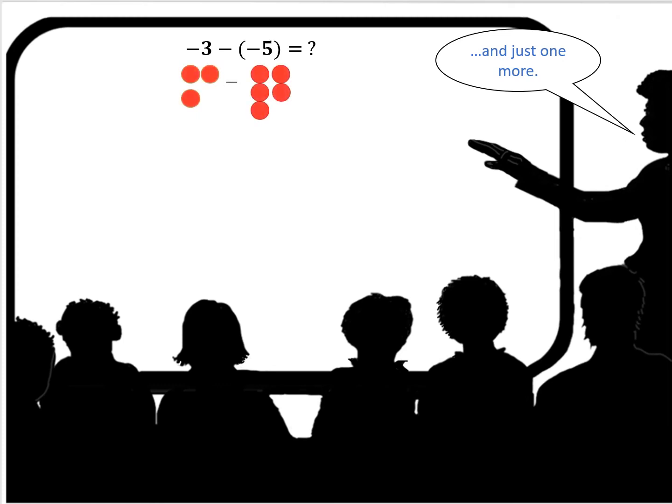Just one more. Negative 3 minus negative 5 is what? I have my 3 negative, negative 3 red chips and minus my negative 5 my red chips. And remember the rule, add the opposite.